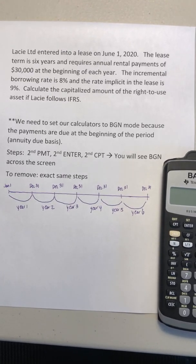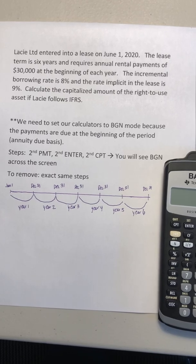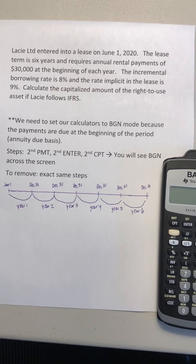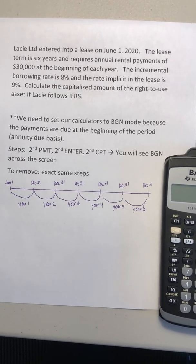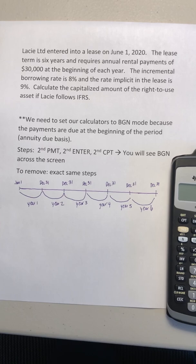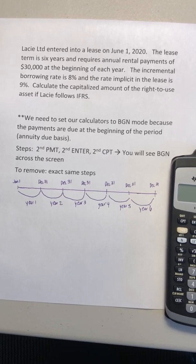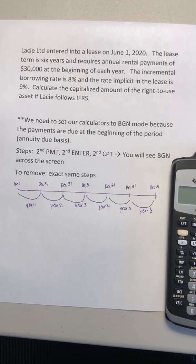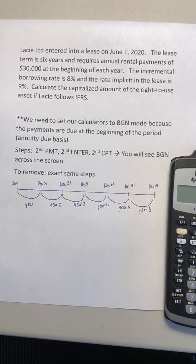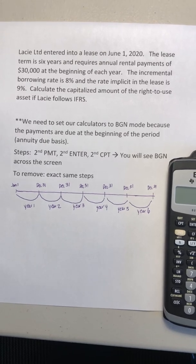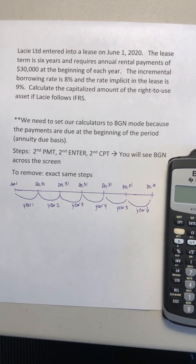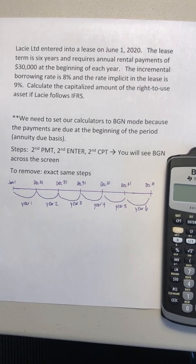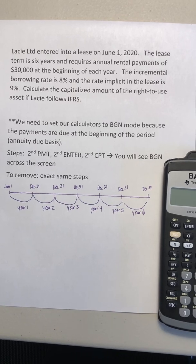This video will discuss the concept of annuity due and how to account for lease payments that are due at the beginning of a period with our financial calculators. Let's take a look at a question. Lacey Limited entered into a lease on June 1, 2020. The lease term is six years and requires annual rental payments of $30,000 at the beginning of each year. The incremental borrowing rate is 8% and the rate implicit in the lease is 9%. Calculate the capitalized amount of the right-to-use asset if Lacey follows IFRS.